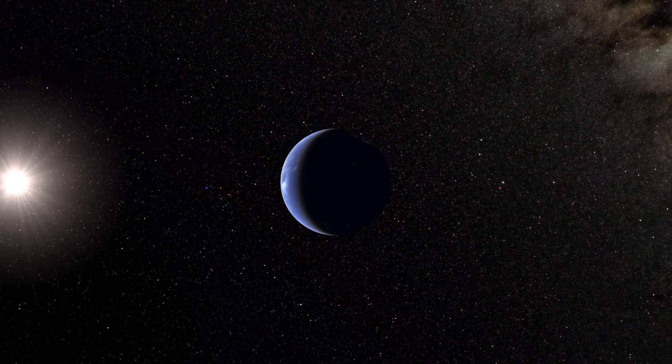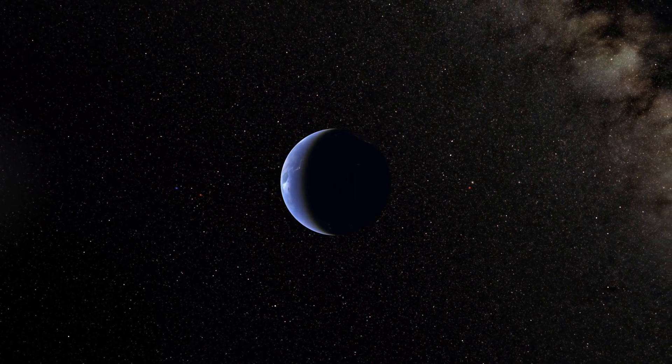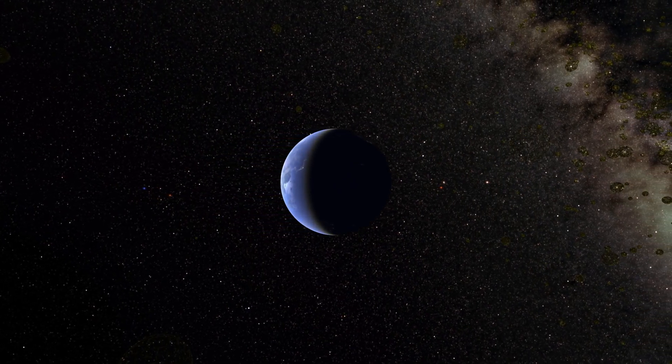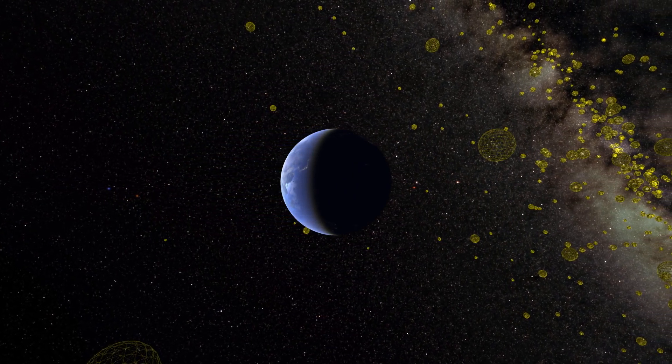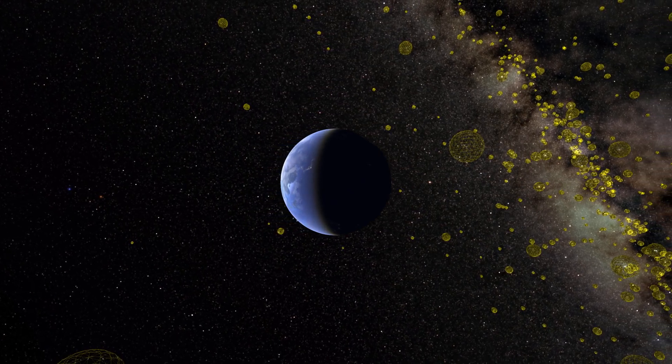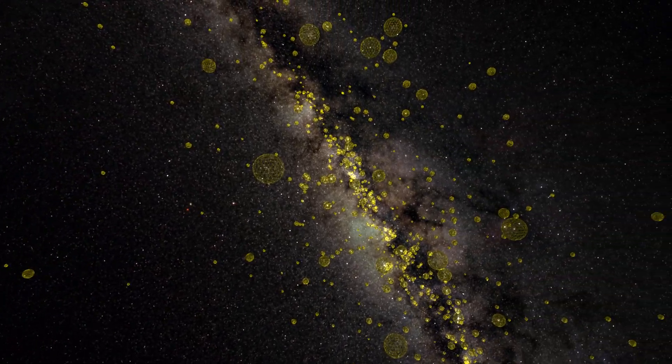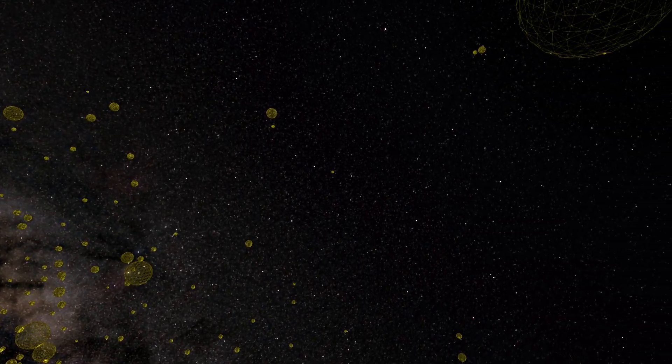Many star clusters were known before the Gaia mission. They are marked as yellow spheres. The Gaia satellite is about 1.5 million kilometers away from the Earth.